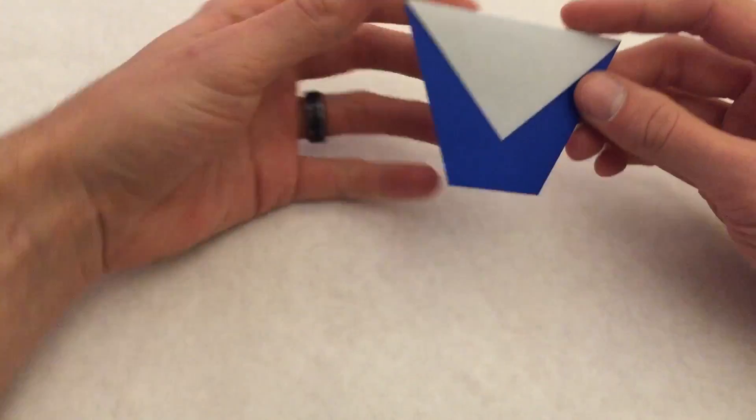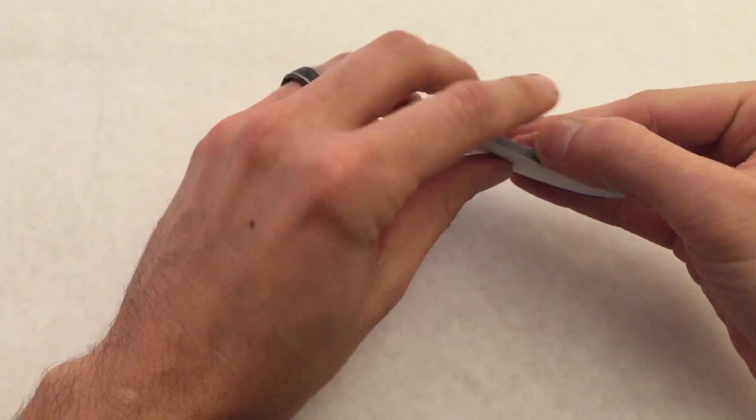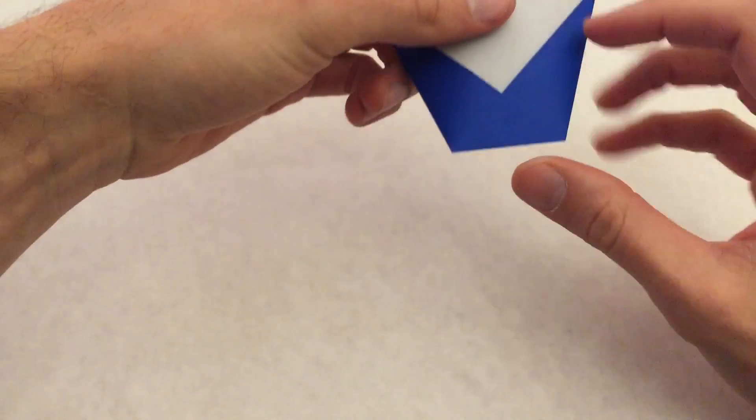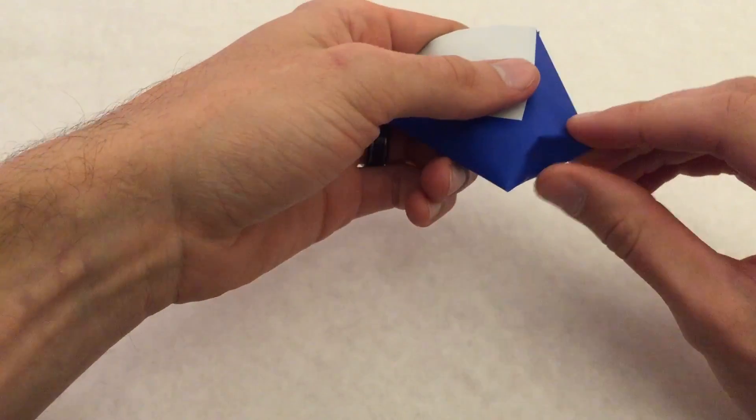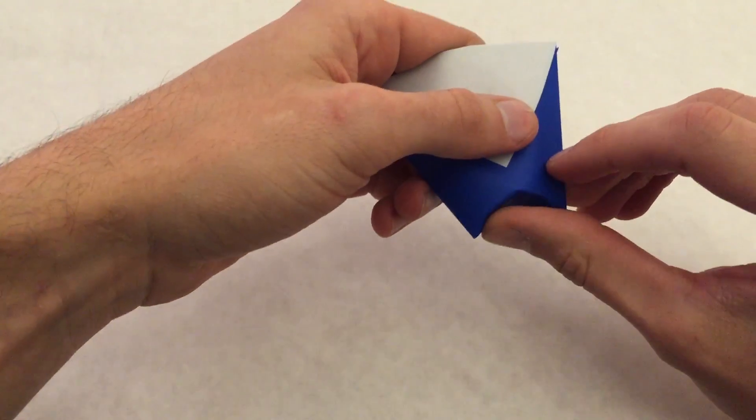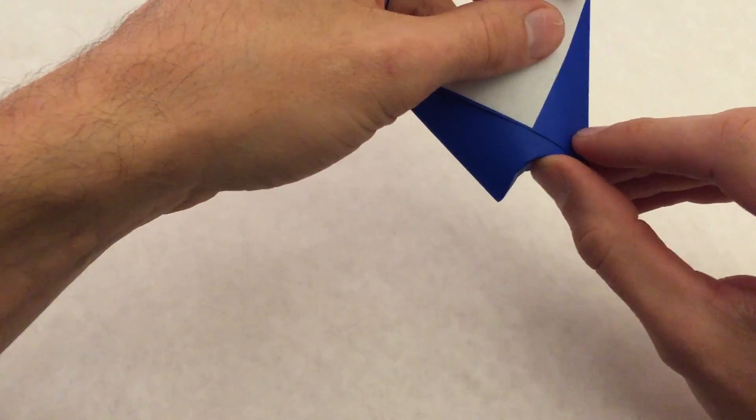Now you can pick it up and stick your fingers inside just to open it up a little bit. And then you'll make a little crease just right on the bottom. Just push in just a little bit and make kind of a curved crease right here. Same on both sides.